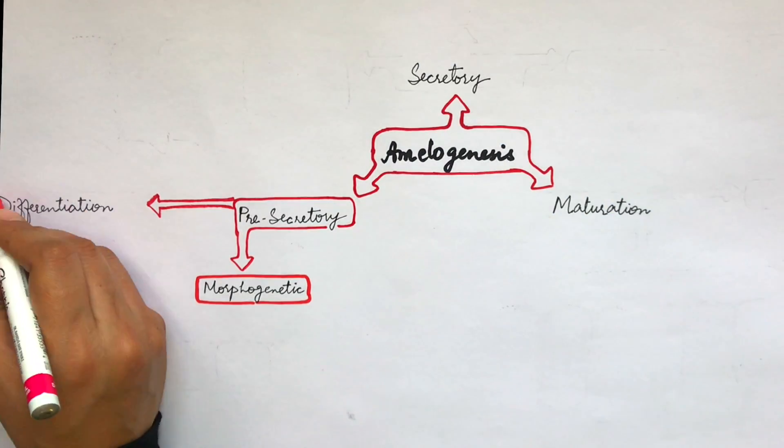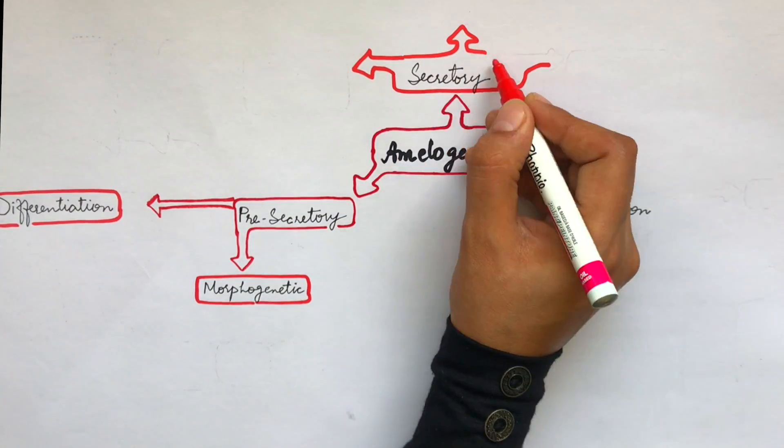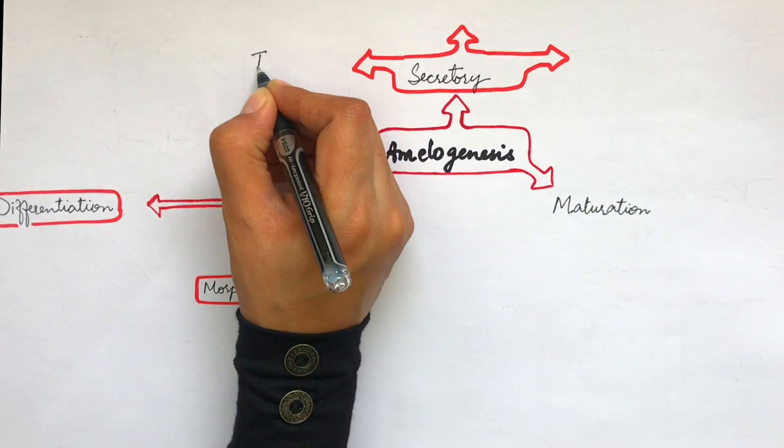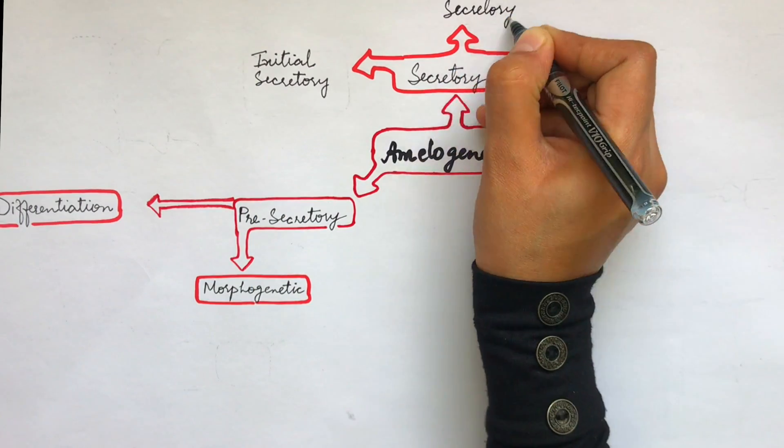In the secretory stage, the ameloblast secretes the enamel matrix and is further divided into three other phases called the initial secretory, the secretory, and the final secretory phase.